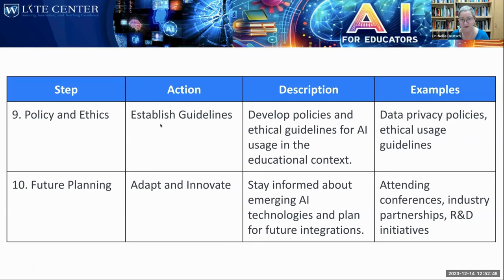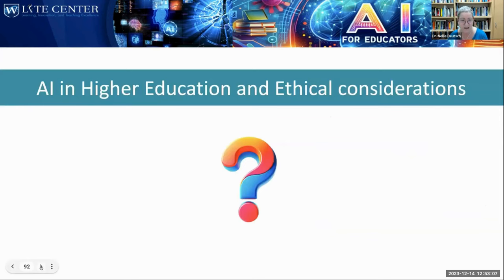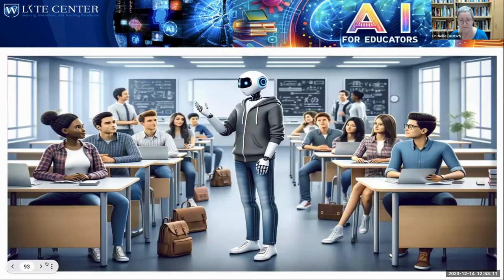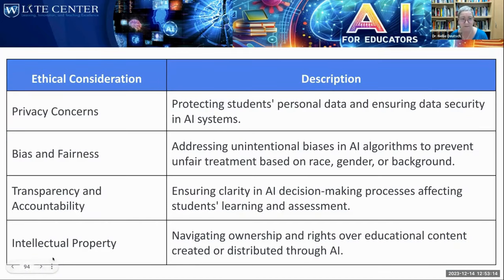We need to look at policy and ethics — establish guidelines after we see how things are working. There's privacy policies, ethical usage, and future planning. There are many ethical considerations: privacy, bias — and generative AI will tell you that they are biased, just ask them. Transparency and accountability. Intellectual property is a huge problem we need to share with our students — our concerns should be their concerns. And of course there's the digital divide: can our students afford ChatGPT 4? Maybe just Google Bard because it's free.